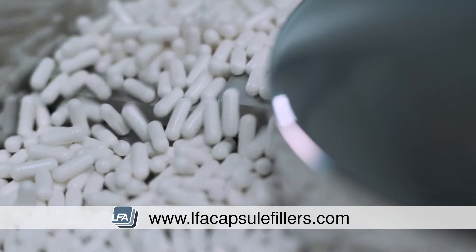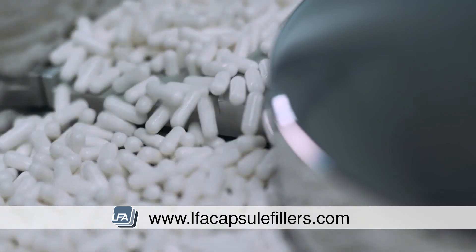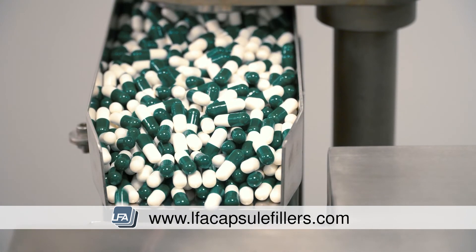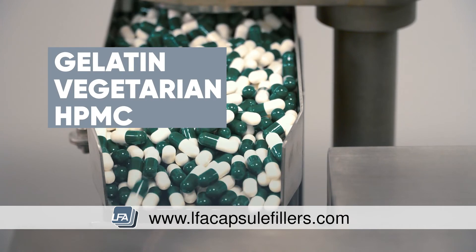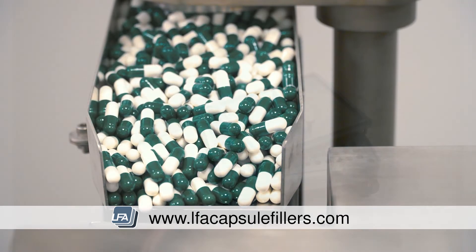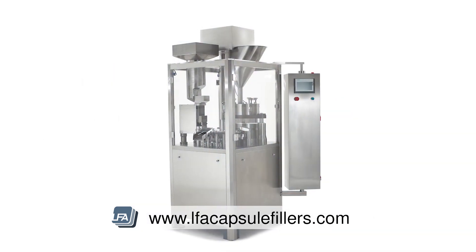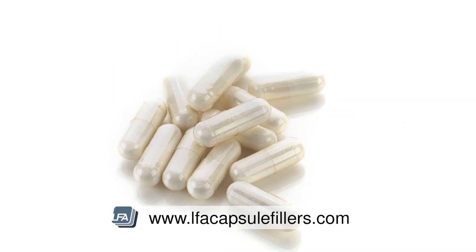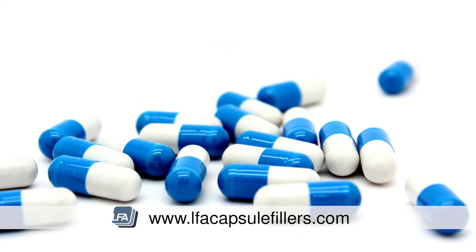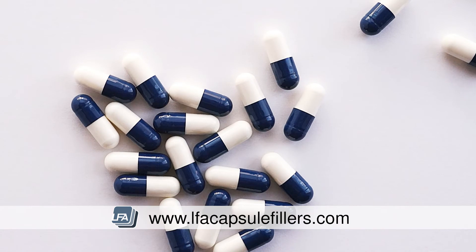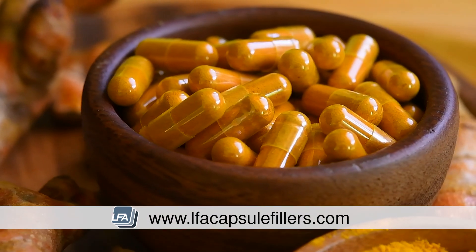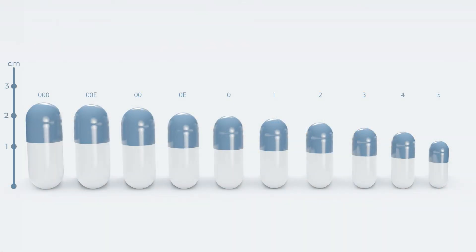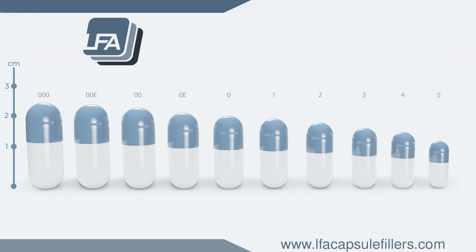LFA's capsule range is manufactured in the USA in a state-of-the-art facility to provide a higher standard of capsules. We currently supply all three types mentioned: gelatin, vegetarian, and HPMC. Our capsules have been designed to be used with all of our capsule fillers, from manual to fully automatic. Capsules are clear by default but different colors are available on request. Both gelatin and vegetarian capsules are also available separated. There are 10 capsule sizes available, from the triple zero at 26.1mm closed length to the five at 11.1mm. For more information, visit www.lfacapsulefillers.com.